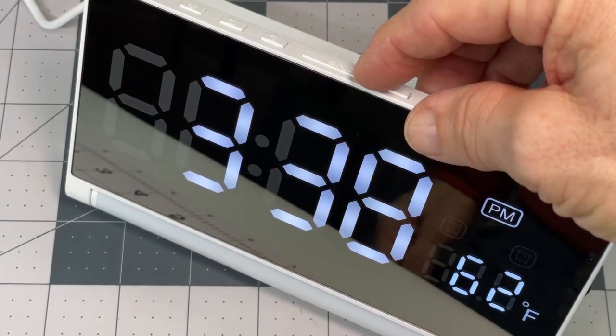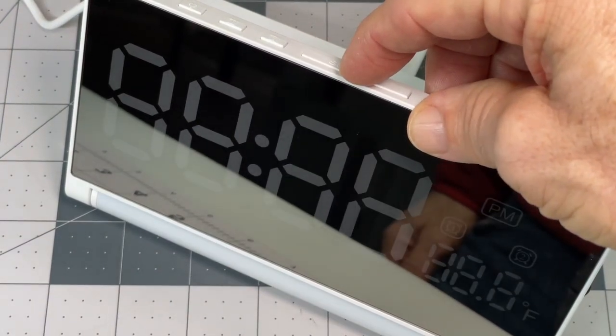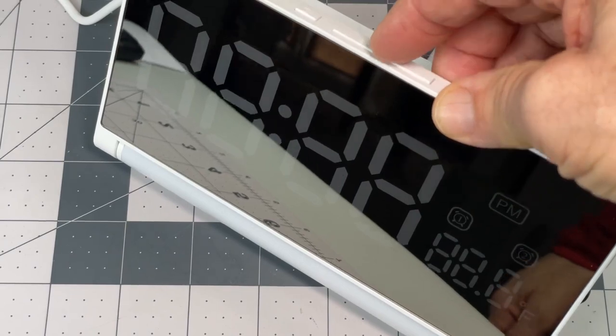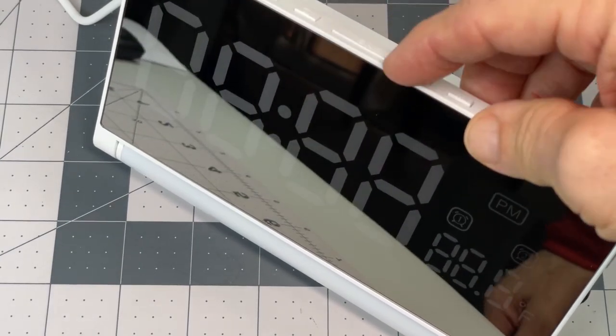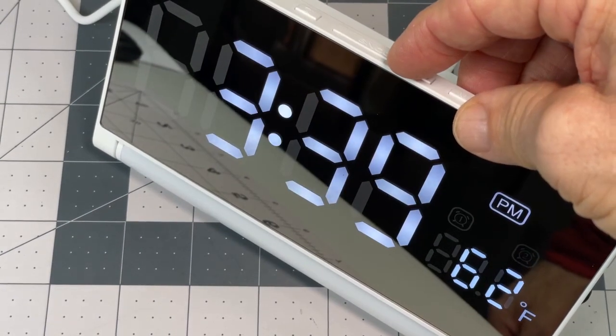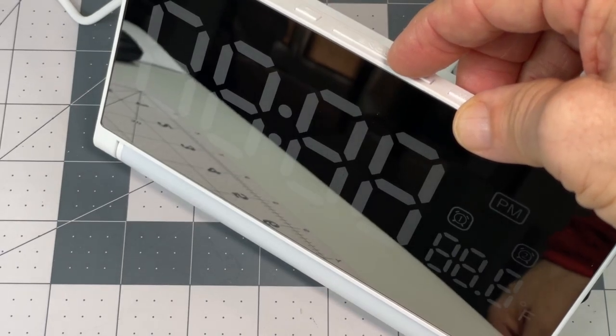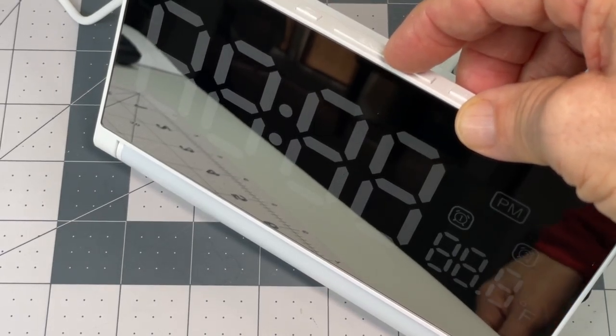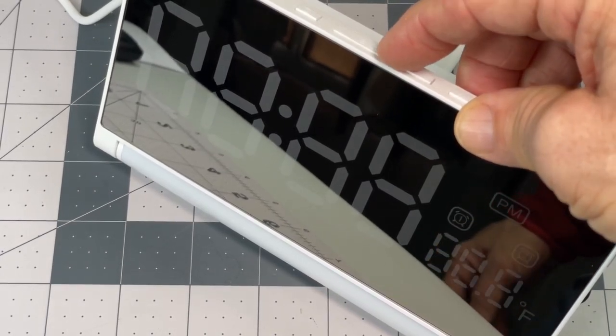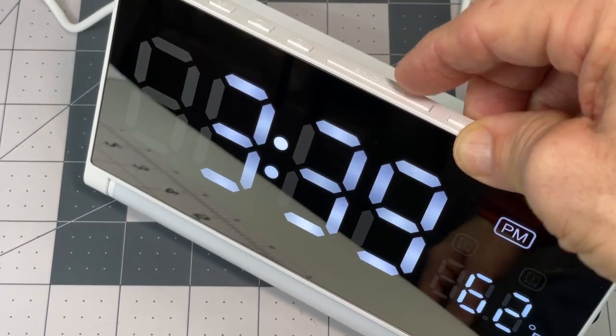But what I also found, not in the instructions, is that if you just hit the snooze button here, the display goes off, which is really nice because I like it just totally dark in the room. So that is awesome.